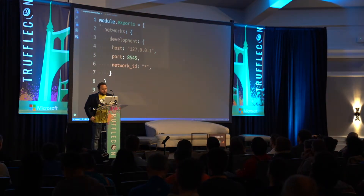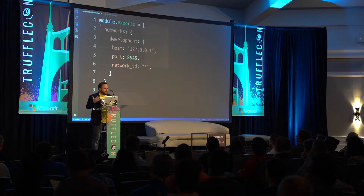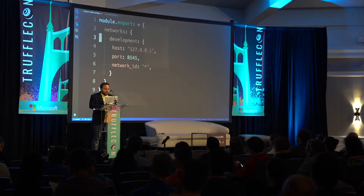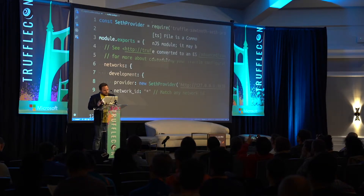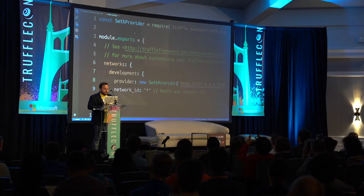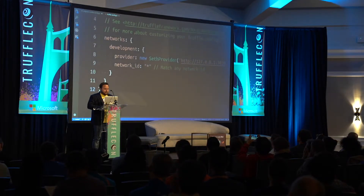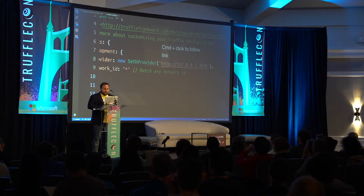So if you remember, for those of you who are developers in the room, if you remember how to configure a network, this is your usual network configuration. It looks pretty straightforward. You've got a network name, you've got a host, you've got a port. No big deal. But with our new, very alpha Sawtooth integration, we have a SATH provider. The host and the port go away. We create a new instance of that SATH provider, we give it a URL, and that's it.